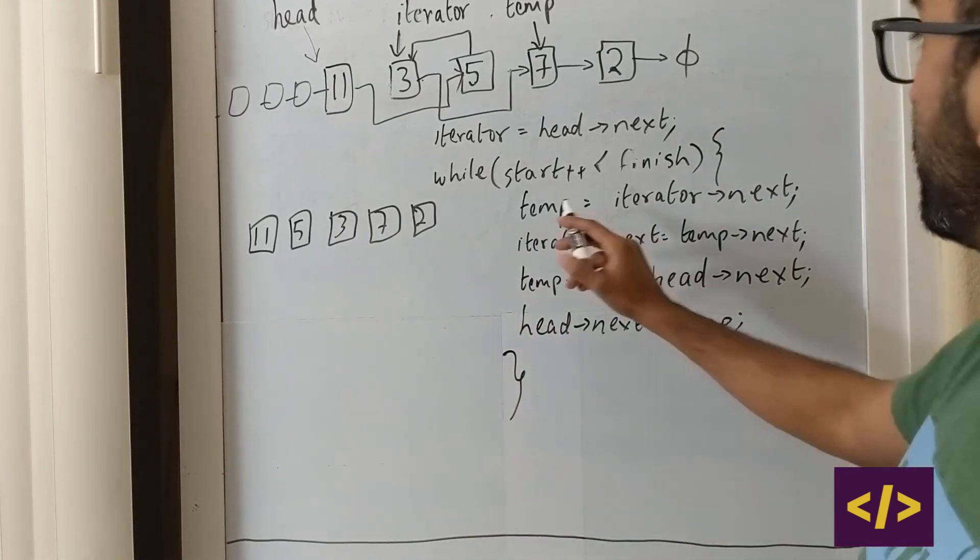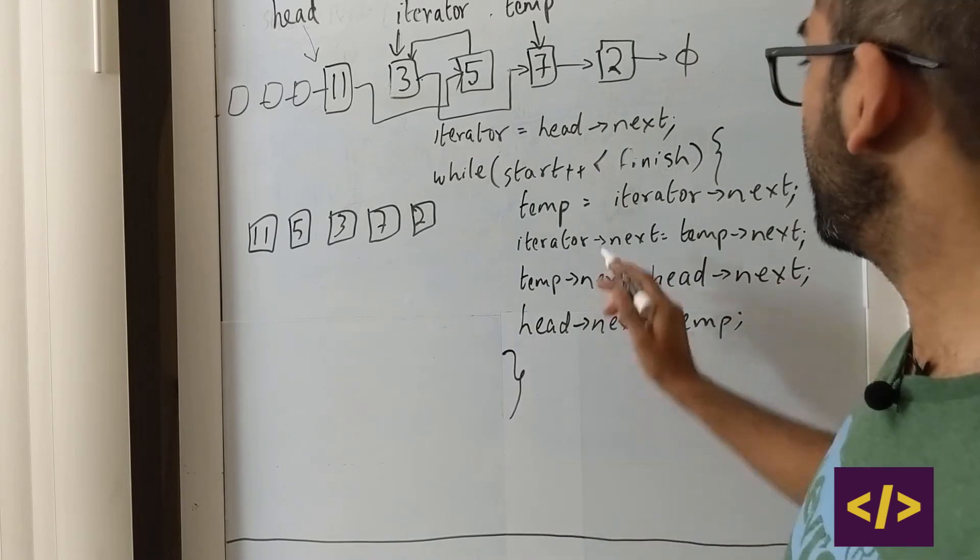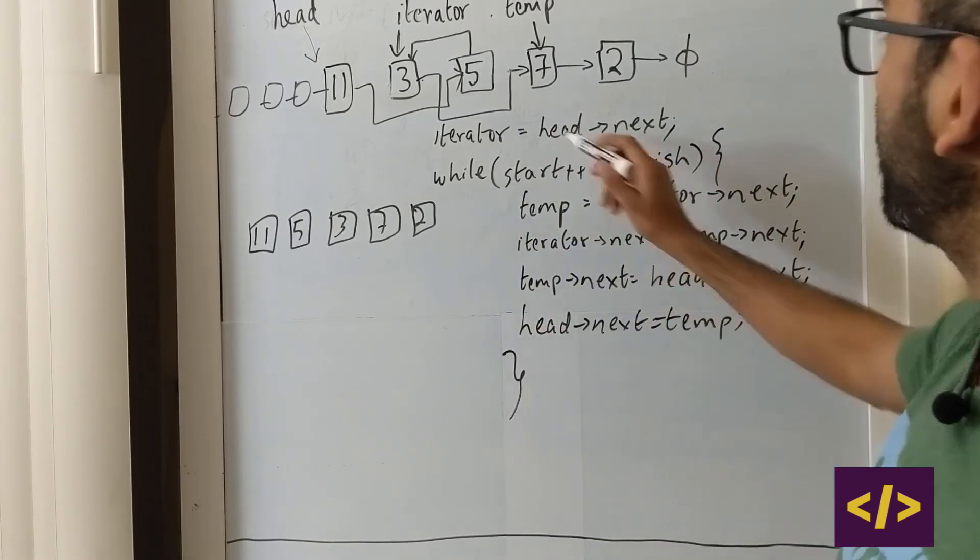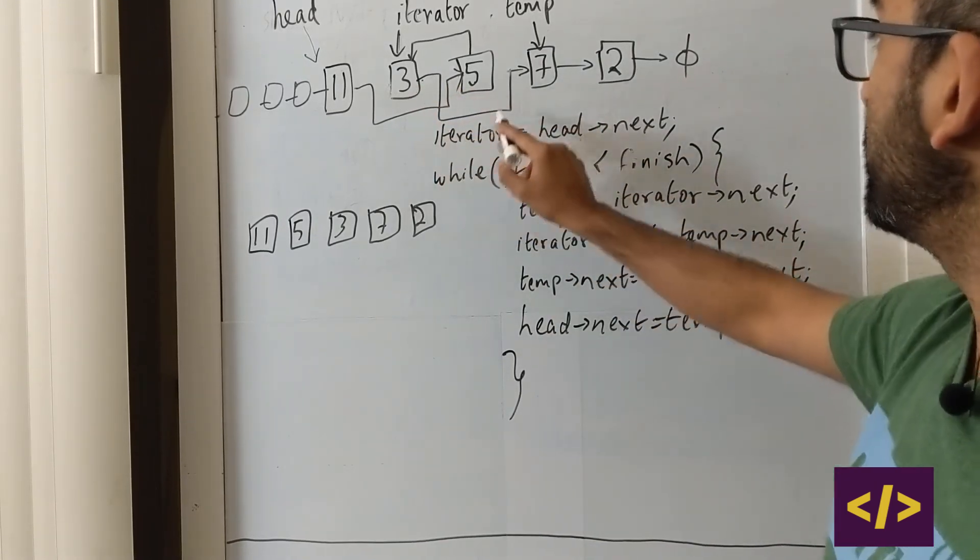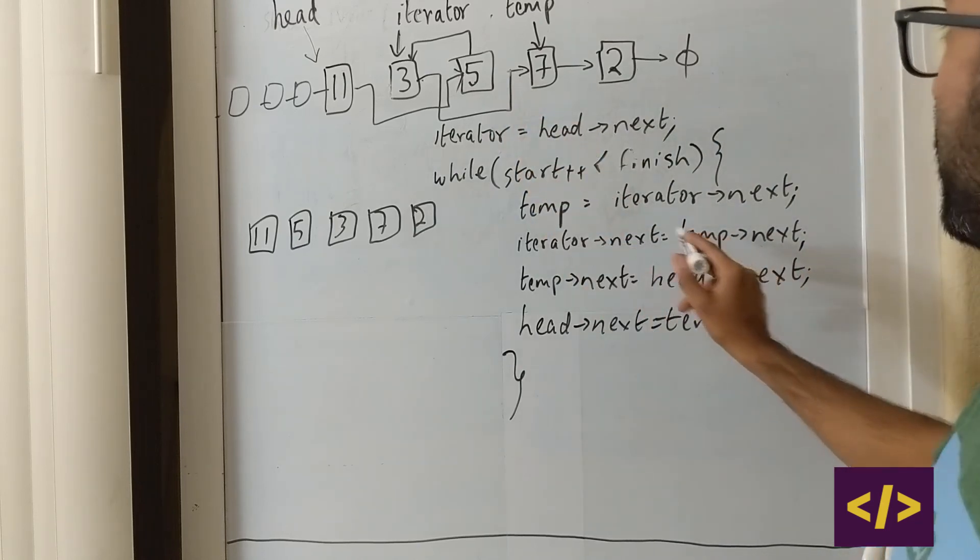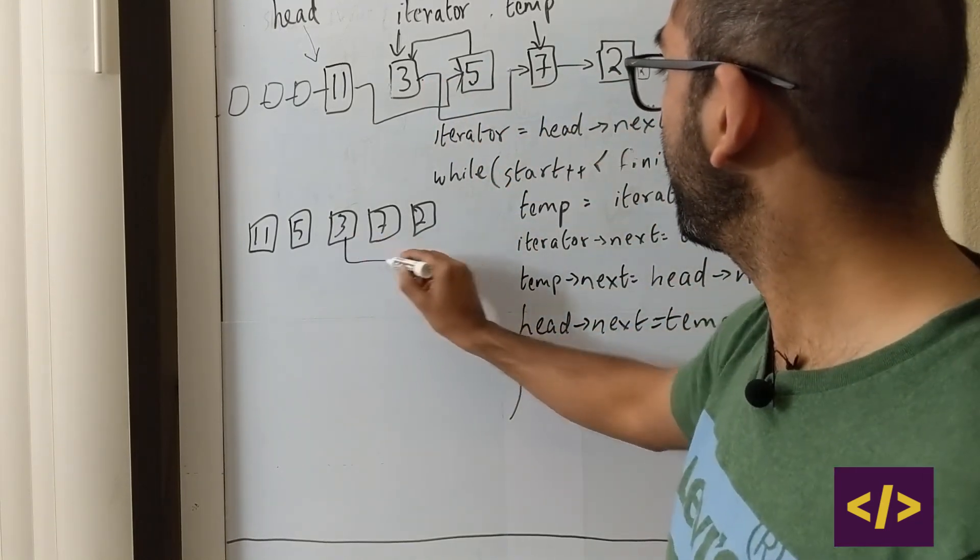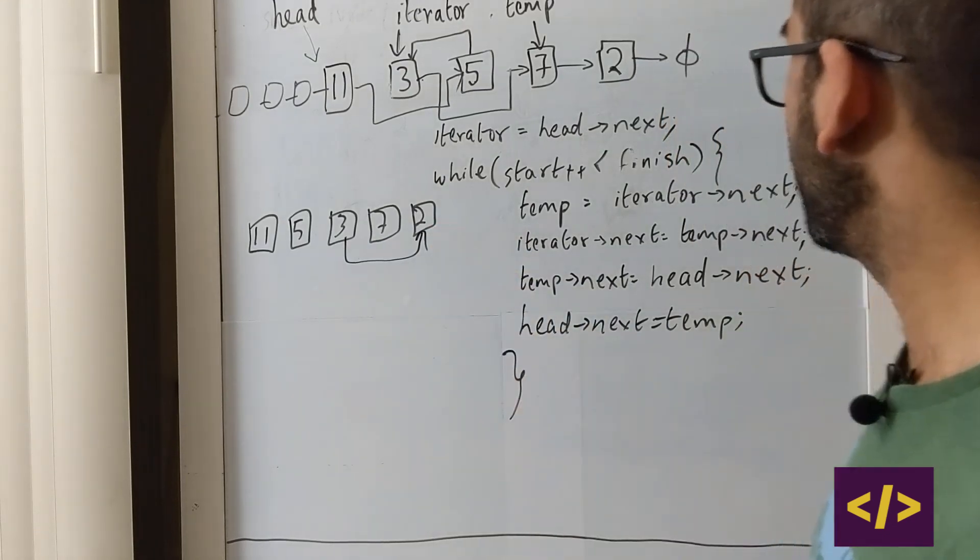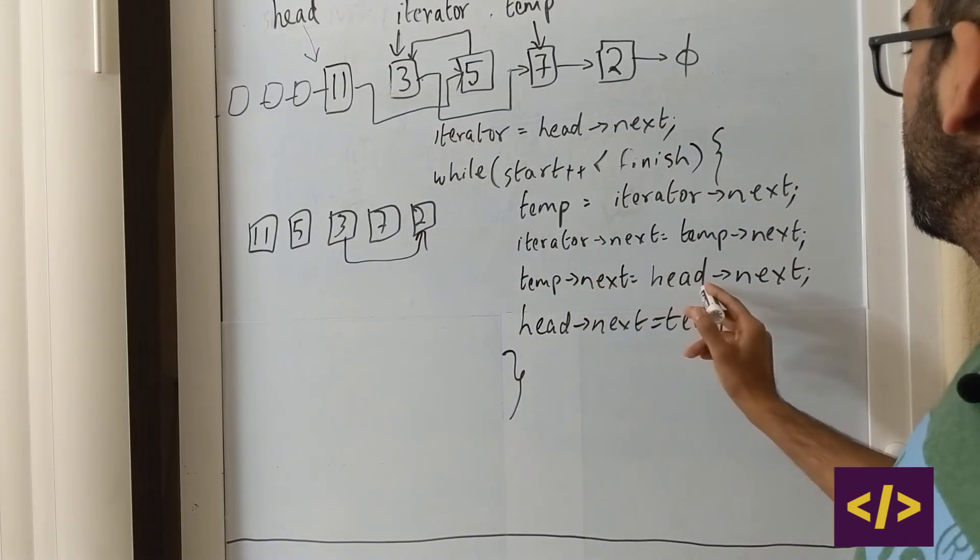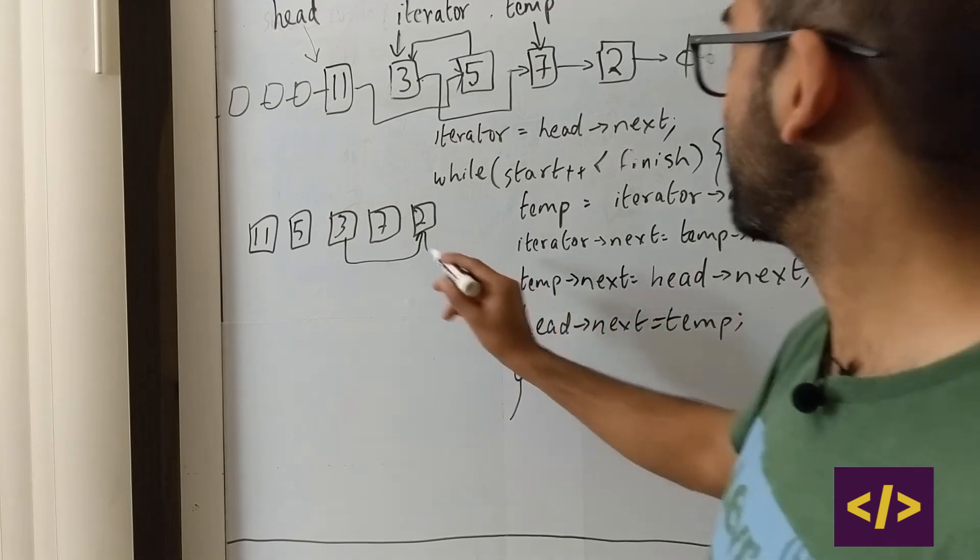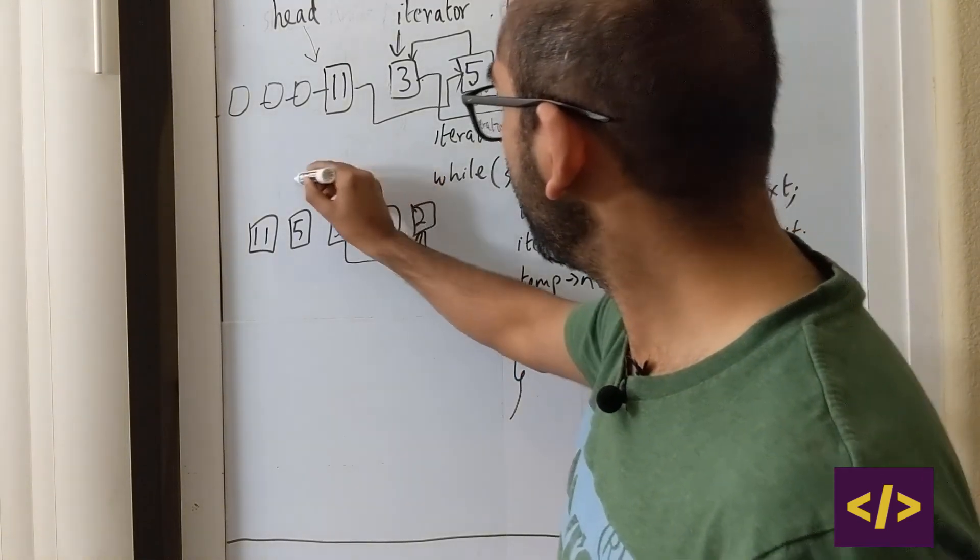Let's iterate through this. Now, let's do temp. That's done. Iterator of next. What's our iterator? 3. 3 of next is equal to temp of next. That would mean that 3 would point to 2. Right? And then temp of next would point to head of next. Now, look at this thing.